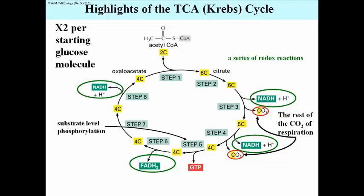In a subsequent reaction, the GTP transfers its phosphate to ADP to make ATP. So the net result of this substrate-level phosphorylation is to produce another ATP — one per cycle, or two more ATPs per glucose per two turns of the cycle. Bacteria actually make the ATP right away; it's only the higher organisms that have this intervening GTP production.